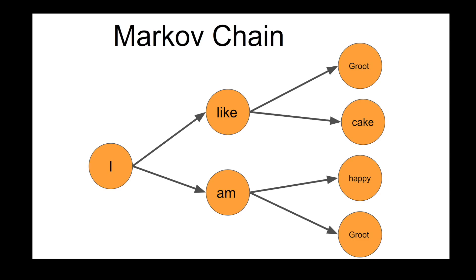Let's look at how a Markov chain works in the context of speech. Let's say we have a comprehensive tree of all the sentences I've said in the last few minutes: I like Groot, I like Cake, I am Happy, and I am Groot. We can summarize those sentences with this tree. I sometimes leads to like, and sometimes leads to am. Like leads to Groot and Cake, and am leads to Happy and Groot. Now, it could be that I've said these sentences with different frequencies, and you can see that I is more likely to lead to am than to like.